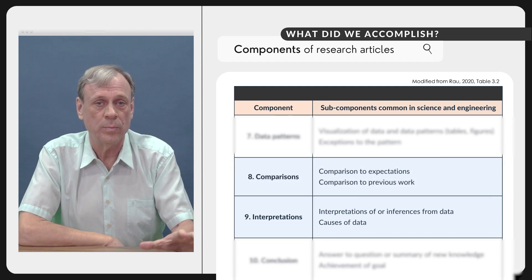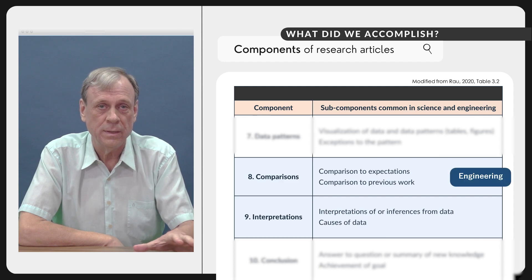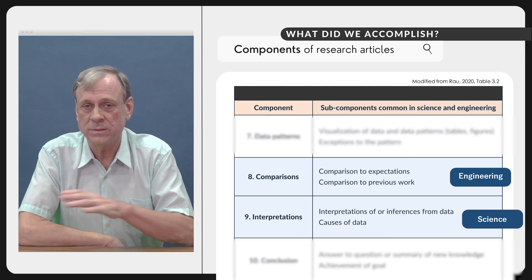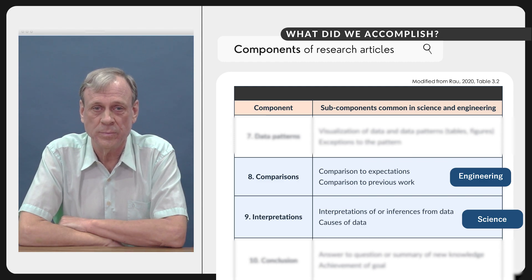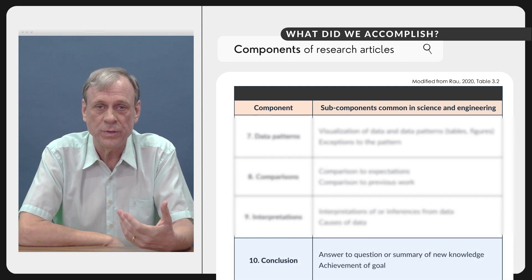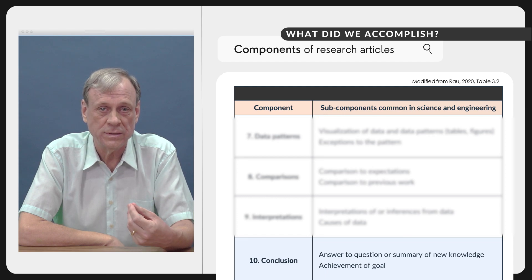Comparisons is generally more important in engineering, interpretations is generally more important in science, but again there's some variation depending on the particular research that's being done. And then the conclusion, a statement, a summary of what you learned in this and leading on to the future work.